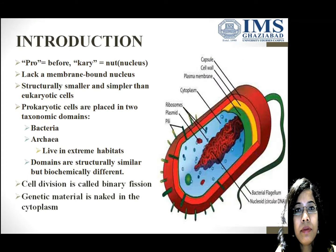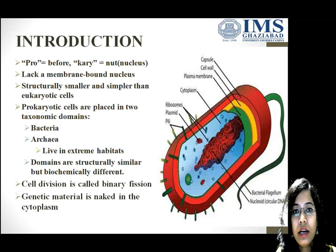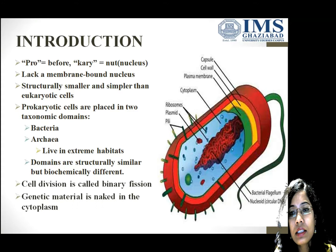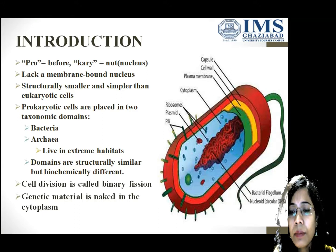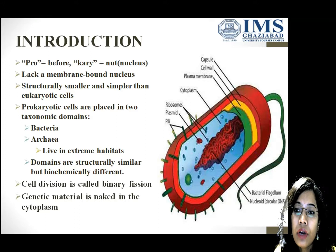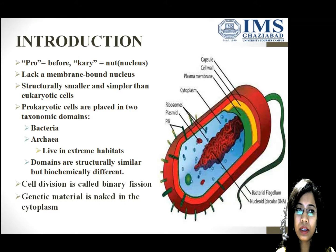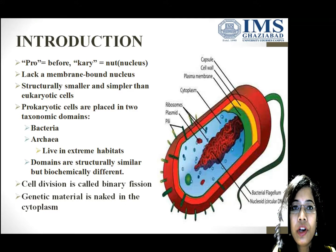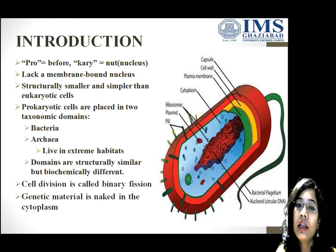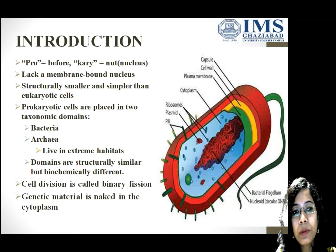As I have told you, pro means before and primitive, and karyo means nut or kernel, which is the inner part of a cell — the nucleus. It is a cell which lacks a membrane-bound nucleus. It is smaller in structure and simpler than a eukaryotic cell, because the eukaryotic cell has a well-defined nucleus. A well-defined nucleus means it has a nuclear pore, nuclear membrane, nucleoplasm, and chromatin material. But in a prokaryotic cell, you don't get any specialized structure like a nucleus.